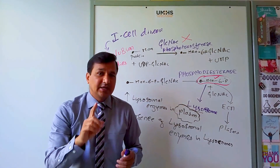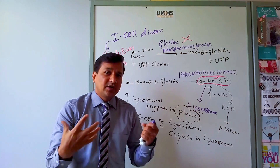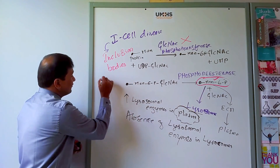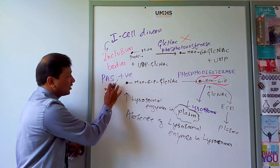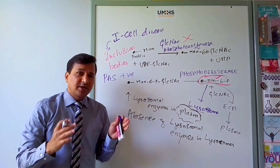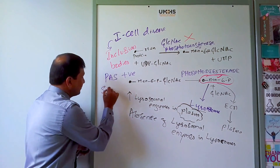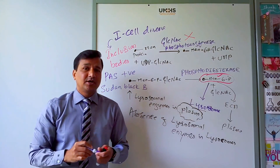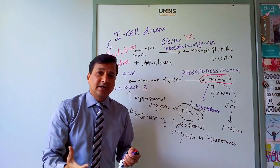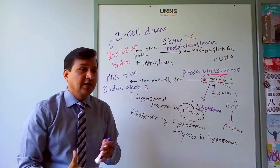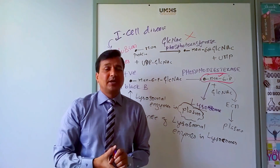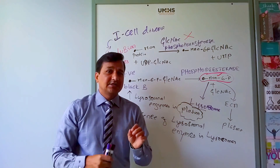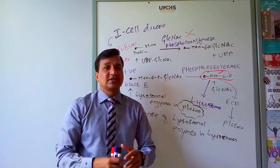Since all kinds of materials are accumulated in this disease, if you use stains for different materials, all of them will come out positive. I-cell disease will stain PAS positive — PAS is periodic acid-Schiff stain, a carbohydrate staining method. Sudan black B will also be positive, which stains for lipids. If you stain for protein using ninhydrin stain, it comes out positive. If you stain for nucleic acids, it also comes out positive. All kinds of material accumulate in I-cell disease, and inclusion bodies staining positive for all these materials is a key indication of I-cell disease.